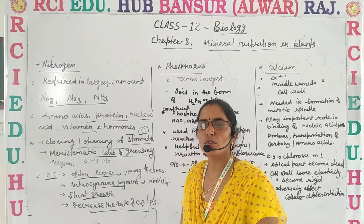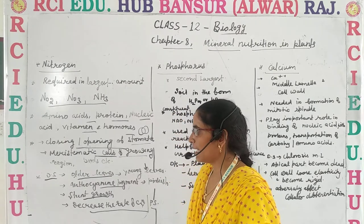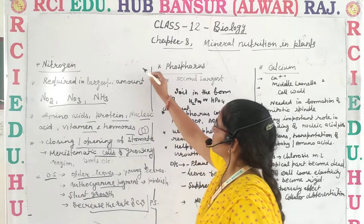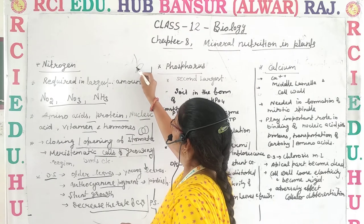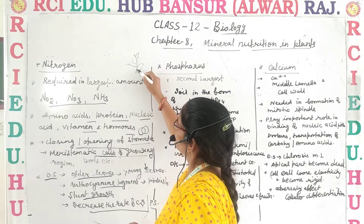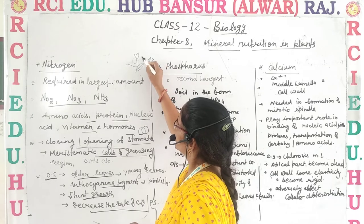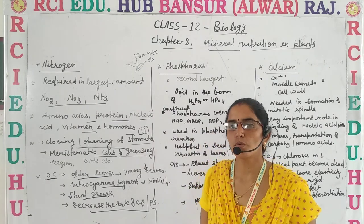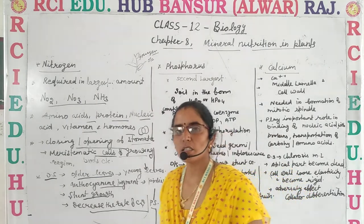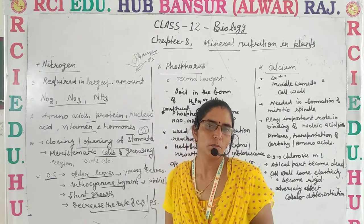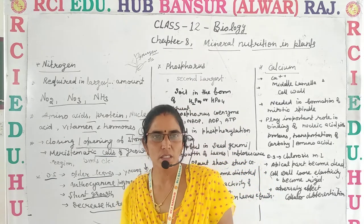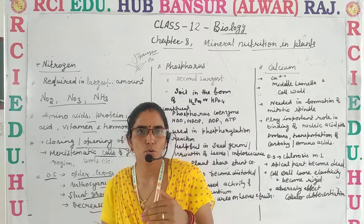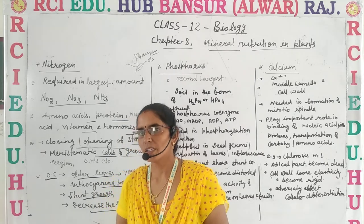If we discuss the deficiency symptoms of nitrogen, its deficiency symptoms first appear in the older leaves. For example, in a plant, symptoms appear first in the older leaves and later in the younger leaves — this is one peculiar feature of nitrogen deficiency. Also, due to the dominance of anthocyanin pigment, the leaves become reddish or pinkish in color. Deficiency of nitrogen also causes stunted growth of the plant.